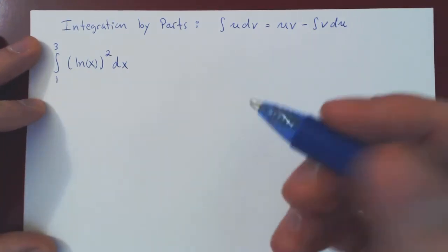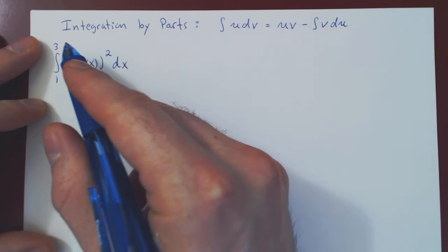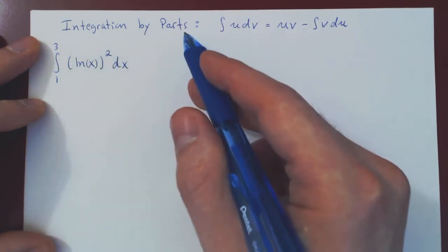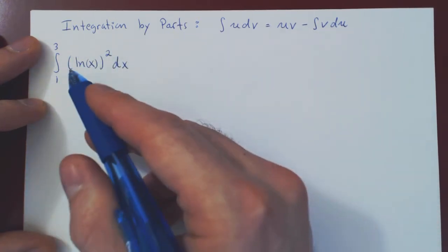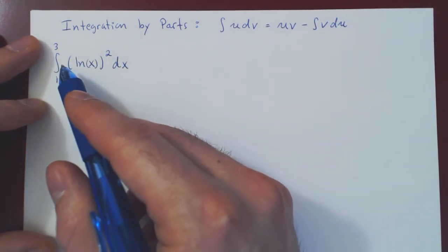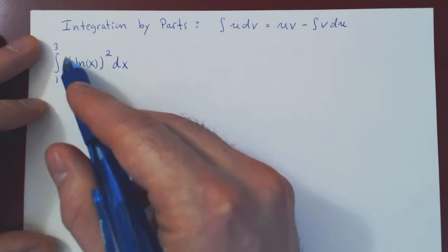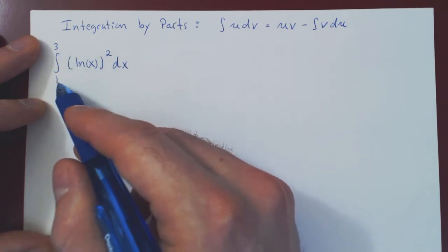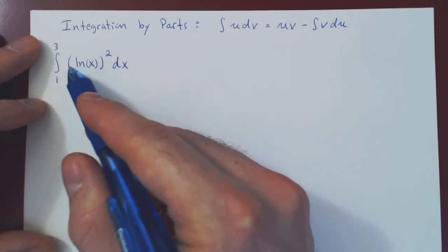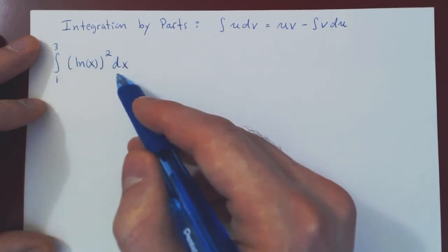In this video, we will consider a second example of integration by parts, finding a definite integral — that is, the integral from 1 to 3 of (ln x)² dx.